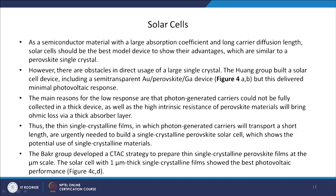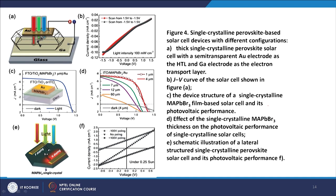Another research group, the Bakker group, developed a CTSE strategy to prepare thin single crystalline perovskite film at the micrometer scale. The solar cell with 1 micron thick single crystalline film showed the best photovoltaic performance. You can see different geometries for making the perovskite single crystal: the perovskite single crystal sandwiched between a gold electrode and a gallium electrode, with light falling from the semi-transparent gold electrode. The structure is: glass, perovskite MAPbBr3 sandwiched between gold and gallium. You can also use ITO or FTO instead of gallium — so FTO, TiO2, MAPbBr3 single crystal at 1 micron, and gold.